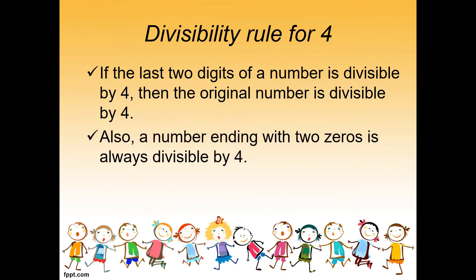Also, a number ending with two zeros is always divisible by 4. If a number ends in two consecutive zeros, it is automatically divisible by 4.